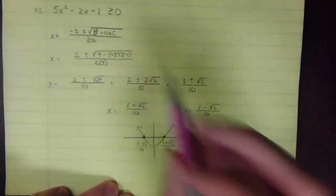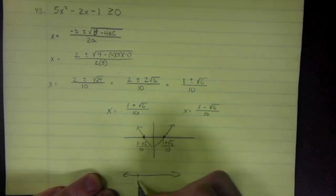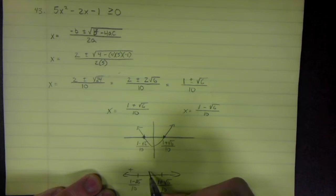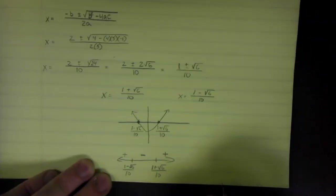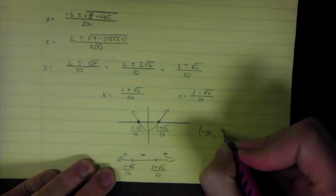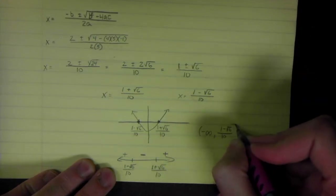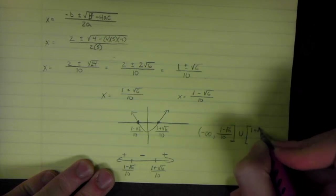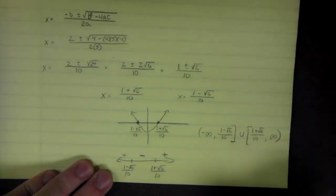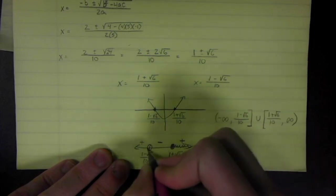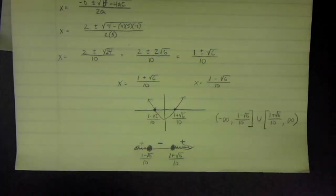I was looking for where it's greater than or equal to 0 — the part that's above the x-axis. The graph is above to the left of (1 − √6)/10, below in the middle, and above to the right of (1 + √6)/10. So in interval notation: (−∞, (1 − √6)/10] ∪ [(1 + √6)/10, +∞). On a number line, use closed circles at those points and shade the outer ends.